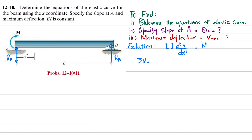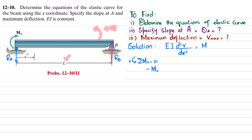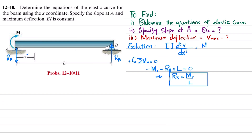First equilibrium equation: sum of all moments about point A equals zero, taking counterclockwise as positive. M₀ is clockwise, so it is −M₀. The moment due to R_B over perpendicular distance L is clockwise — so +R_B · L = 0. From here, R_B = M₀/L.